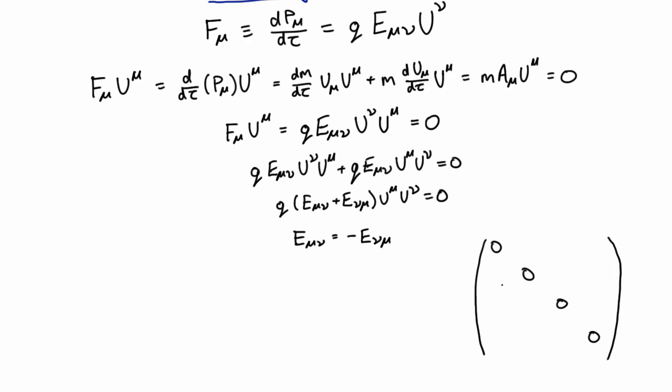What's interesting about six independent components? Well that sounds an awfully lot like two three-vectors, doesn't it? Something like an electric field and a magnetic field. And in fact if we make the following choice, then it turns out that this equation here gives us exactly the Lorentz force law.